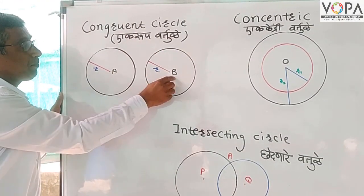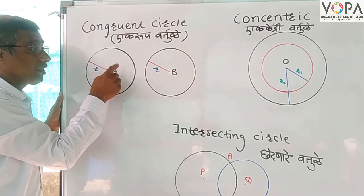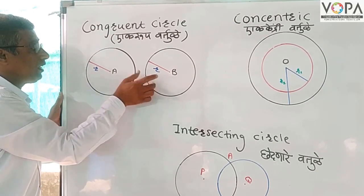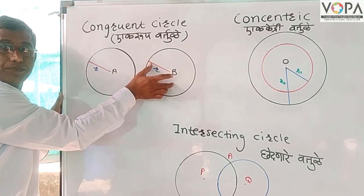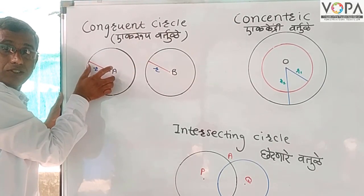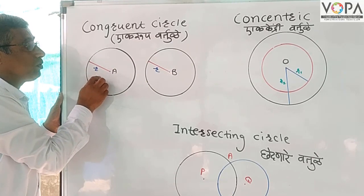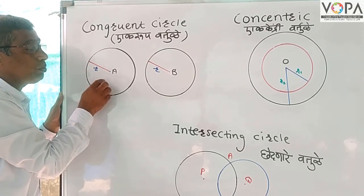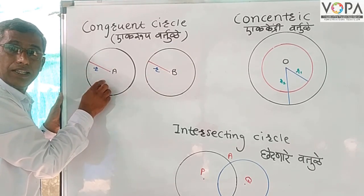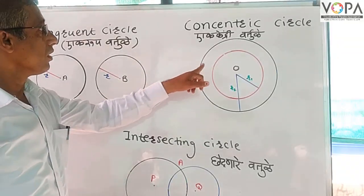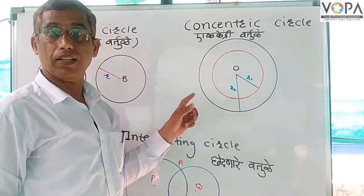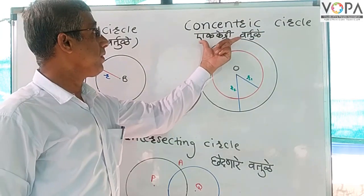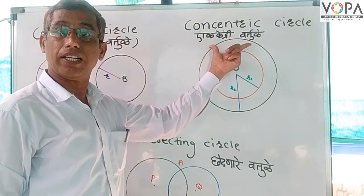Congruent circles: A and B are the centers of two circles whose radii are the same, meaning they are congruent. So we say that these two circles are congruent circles. Next is the concentric circle, in Marathi called 'eka kendri vartul'.